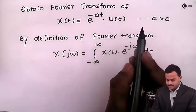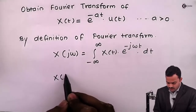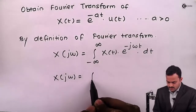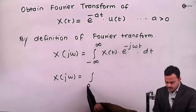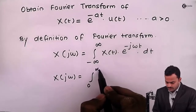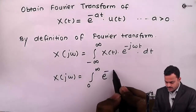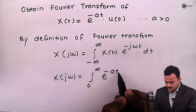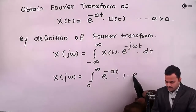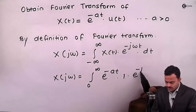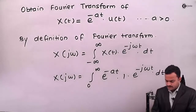Since u(t) is there, for our case the limits of the integral will be from 0 to infinity, and x(t) we are having e raised to minus at. u(t) has a value of 1, so we integrate e raised to minus at times e raised to minus j omega t, dt.